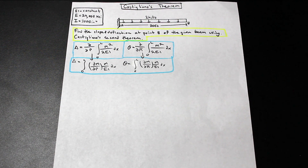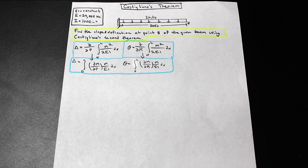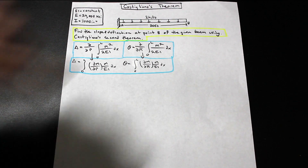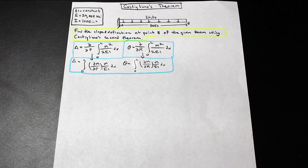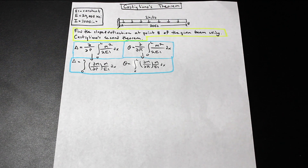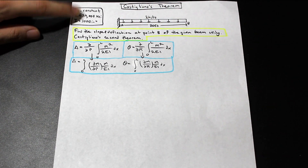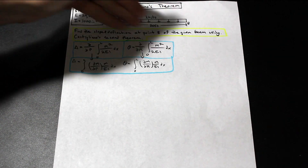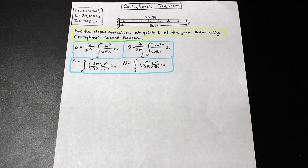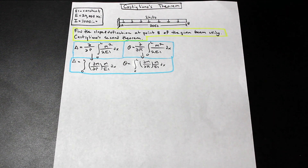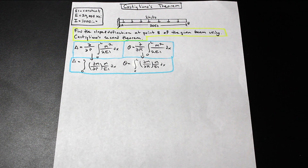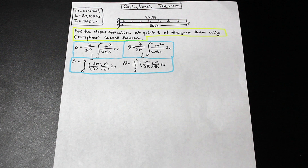The problem involves a cantilever beam where we're asked to find the slope and the deflection at point B, which is the end of the cantilever. We're given E and I, and the moment of inertia of the entire beam is constant. We're using imperial units — inches and kips.